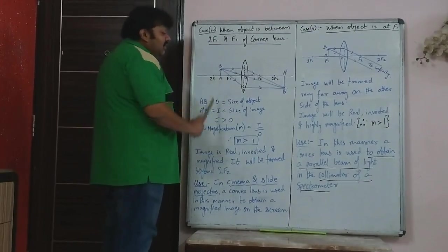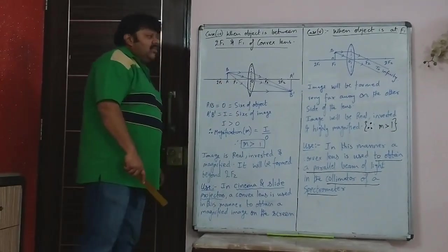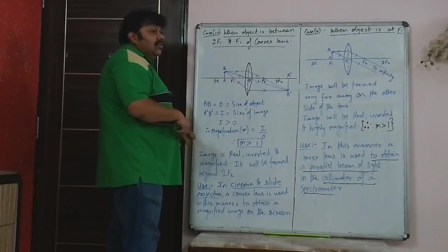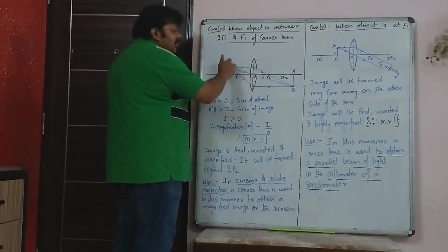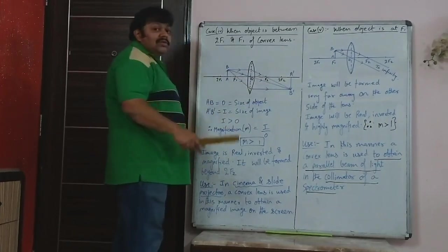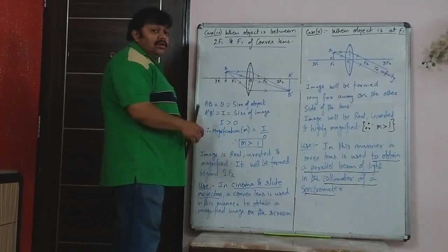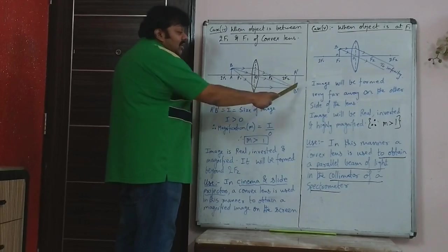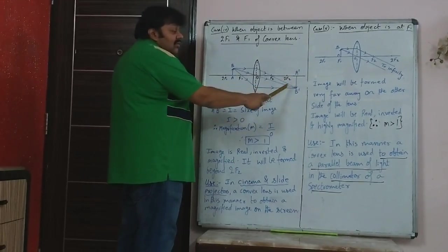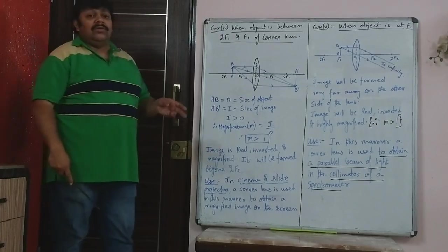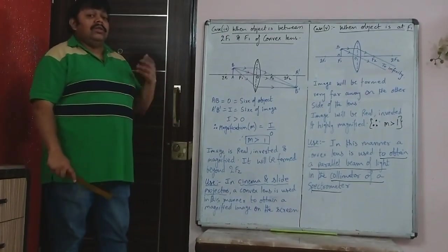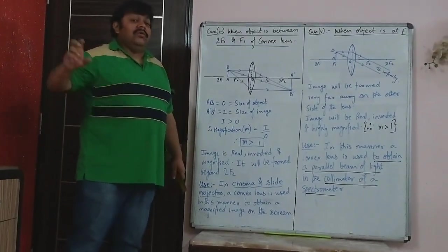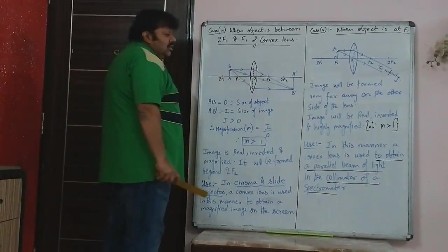Because the object is between 2F1 and F1, we have to find the position of the image. Object AB is erect — anything above the principal axis is called erect, and anything below is called inverted. The rays are actually meeting at a point after refraction, so it is called a real image. Real image is always inverted — whether it is a mirror or a lens. Real and inverted go together; virtual and erect always go together. So here you get a real inverted image.